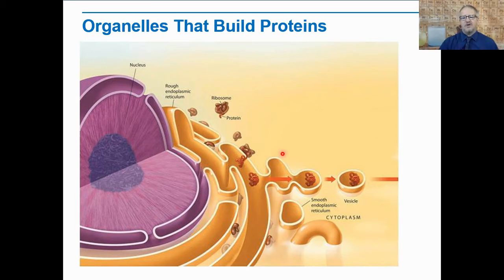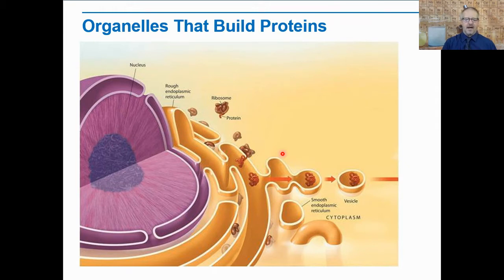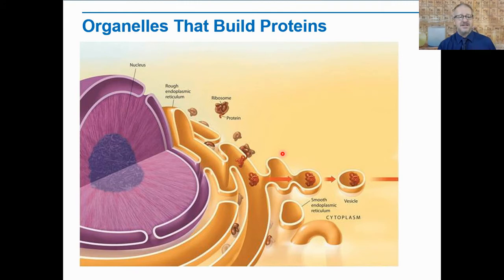Ribosomes are very small particles of RNA — a form of DNA, but not exactly the same. They also have some proteins in them, and they're found throughout the cytoplasm in all cells. Ribosomes' job is to assemble proteins by following coded instructions that come from the DNA.